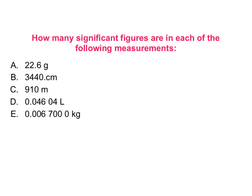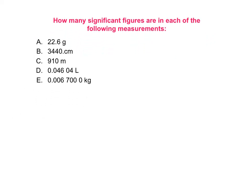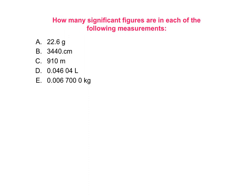Now let's figure out how many sig figs are in each of these numbers. Pause the video and try to figure it out. For 22.6, I have 1, 2, 3 digits — they're all non-zero, so that number has 3 significant figures.